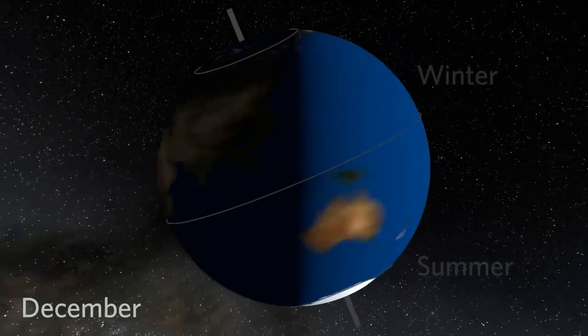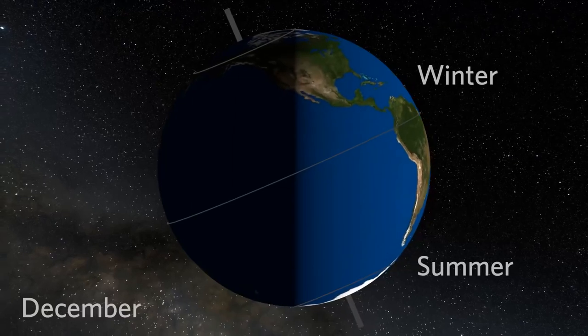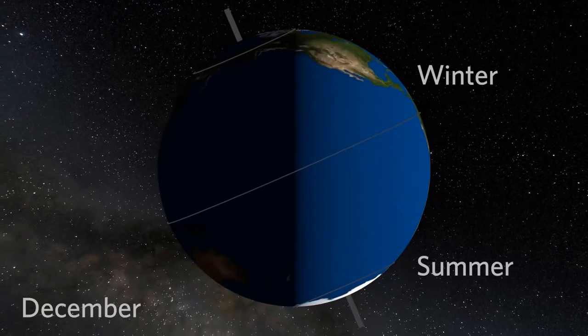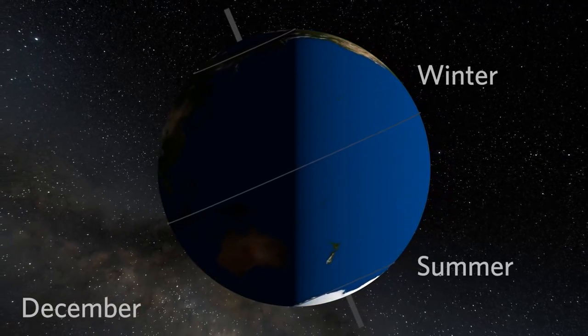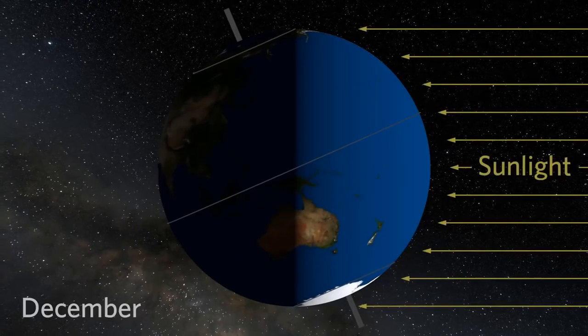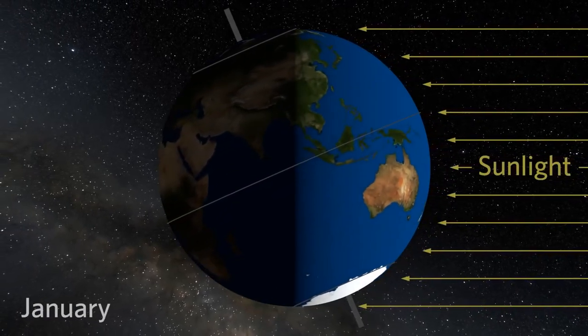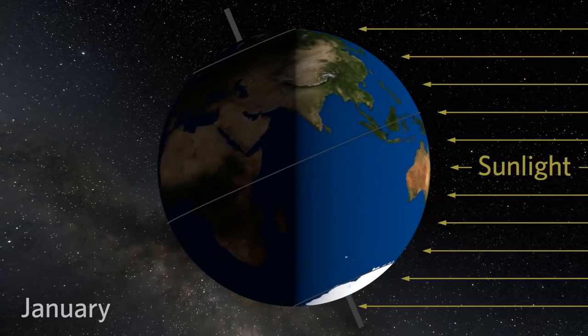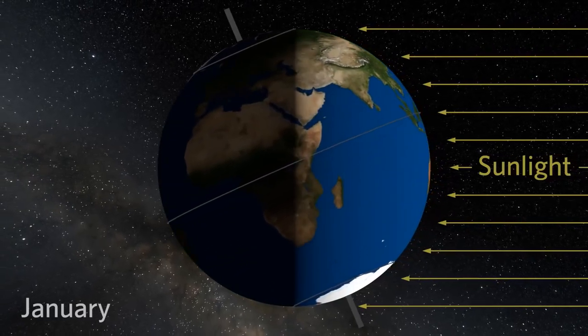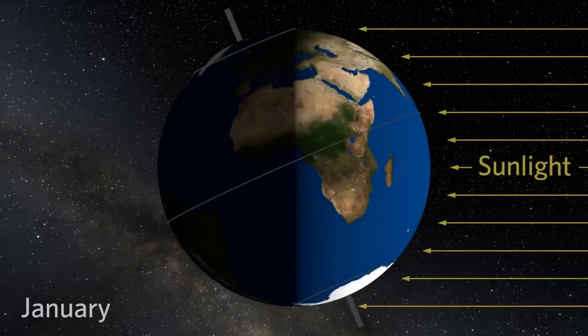Let's look at Earth when it's winter in the Northern Hemisphere. Observe how the North Pole tips away from the Sun. This means that sunlight strikes the Northern Hemisphere at a shallow angle for a short period of time. This is why winter weather is generally cool with short days and long nights.